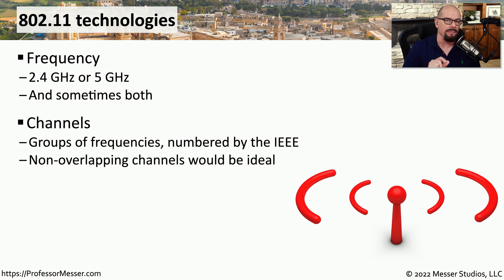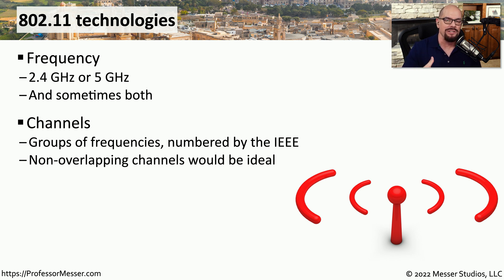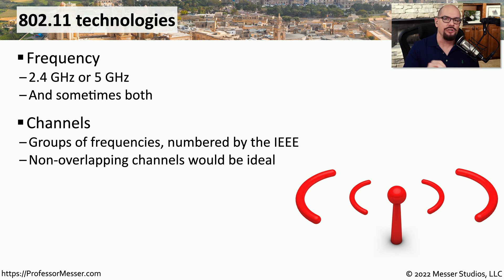You also have to keep in mind that there are separate channels within those frequency ranges that can be used. These are groups of frequencies, and the IEEE has assigned numbers to these frequencies so that we can much more easily refer to which channel we happen to be using. That's why we often say if you're using multiple access points in a particular area, you may want to make sure each access point is running on a different wireless channel.